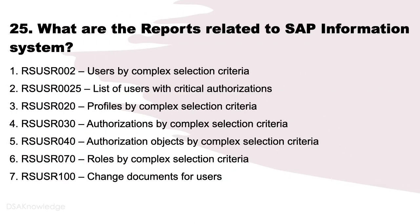What are the reports related to the SAP Information System? 1. RSUSR002: users by complex selection criteria. 2. RSUSR0025: list of users with critical authorizations. 3. RSUSR020: profiles by complex selection criteria. 4. RSUSR030: authorizations by complex selection criteria. 5. RSUSR040: authorization objects by complex selection criteria. 6. RSUSR070: roles by complex selection criteria. 7. RSUSR100: change documents for users.